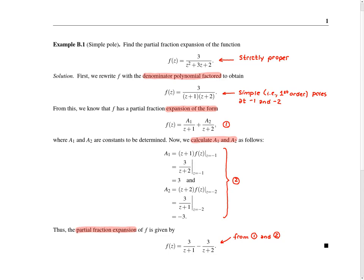In this example, we're asked to find the partial fraction expansion of the function f, where f is given by this particular formula here. To begin, we can make the observation that f is strictly proper, so it does in fact have a partial fraction expansion. To find the partial fraction expansion, we first need to fully factorize the denominator polynomial for f — in other words, factor it into all linear factors. So z squared plus 3z plus 2 factors to (z+1)(z+2), simply by inspection. So the function f has two simple poles: one at minus 1 associated with the (z+1) factor, and one at minus 2 associated with the (z+2) factor.